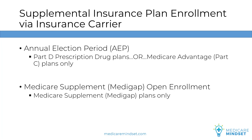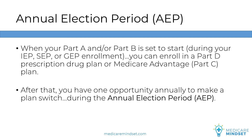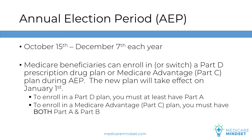Now let's jump into the timeframes when you can sign up for supplemental medical and prescription drug coverage. Part D drug plans and Medicare Advantage Part C plans are one group of plans, and then we'll get into Medicare Supplement Medigap plans. When your Part A and/or Part B is about to begin, you can enroll in a Part D prescription drug plan or Medicare Advantage Part C plan. After that, you have one opportunity each year to make a plan switch during the Annual Election Period, or AEP, which spans October 15th through December 7th. During this timeframe, you can enroll or switch a Part D drug plan or Medicare Advantage plan, with the new plan taking effect January 1st. If you're happy with your plan, no action is required — it will automatically renew. To enroll in a Part D plan, you must at least be enrolled in Part A. To enroll in a Medicare Advantage plan, you must be enrolled in both Part A and Part B.